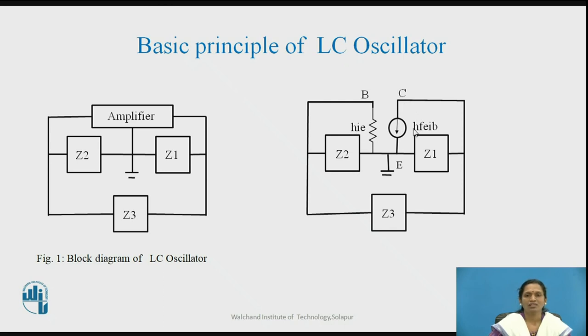HIE which is a input impedance of amplifier. HFE and IB which gives the current source equivalent diagram where we have replaced this HOE as you can see 1 by HOE is very very large and equivalent of that will be over here and HRE is also very very small. So, this is the equivalent diagram for the amplifier.